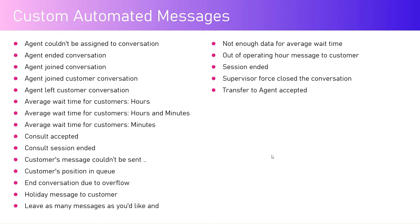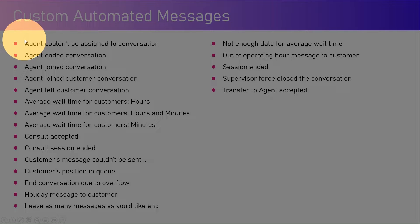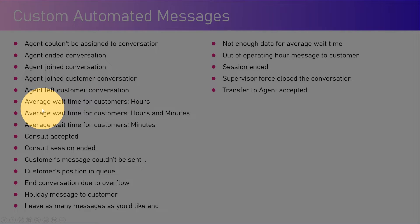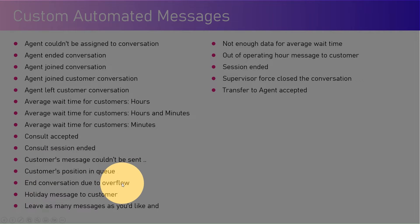Moving on to custom automated messages — there are events which may happen that trigger automated messages. Some of the actions listed include: agent couldn't be assigned to any conversation, agent ends a conversation, agent joins a conversation, agent joined customer conversation, agent left customer conversation, average wait time for customers in hours and minutes, average wait time in minutes, consultation session accepted, consultation session ended, customer messages couldn't be sent, customer's position in the queue, end conversation due to overflow, and holiday message to customer — for when a customer contacts the service team during a holiday.